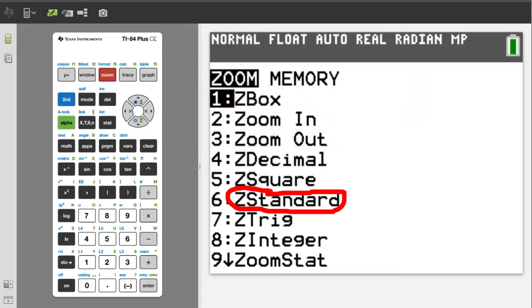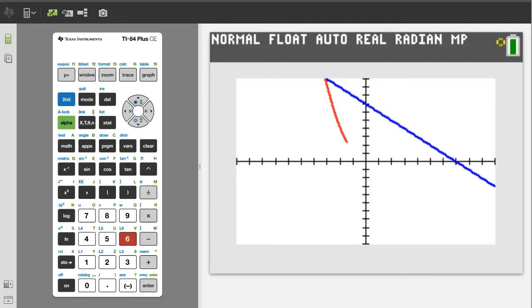I recommend first trying the Z standard. Z standard is number 6, so press the 6 button. Z standard gives you 10 tick marks from the 0,0 point on all the axes, spaced one unit apart.